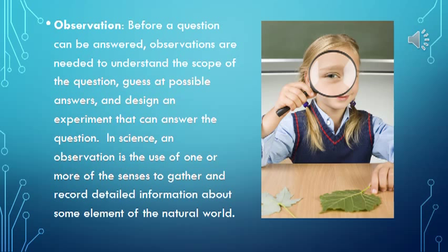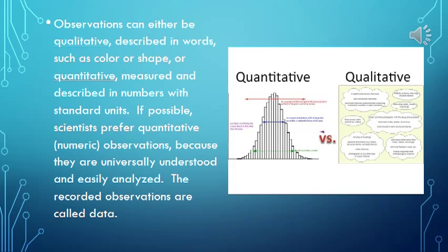Before a question can be answered, observations are needed to understand the scope of the question, guess at possible answers, and design an experiment that can answer the question. In science, an observation is the use of one or more of the senses to gather and record detailed information about some element of the natural world. Observations can either be qualitative — described in words such as color or shape — or quantitative, measured and described in numbers with standard units. Scientists prefer quantitative observations because they are universally understood and easily analyzed. The recorded observations are called data.